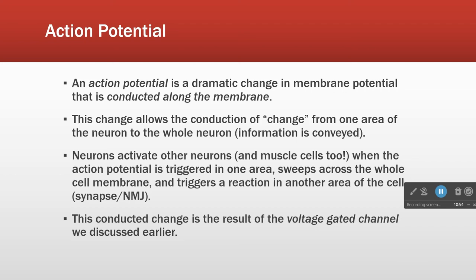A couple of things to remember about neurons: they either fire or they don't. There is no half-fired. A neuron is either stimulated to have an action potential or it is not. The way a neuron transmits analog information is in frequency — a neuron that fires fast is saying a lot is happening; a neuron that fires slowly is saying something's happening, but not very much.